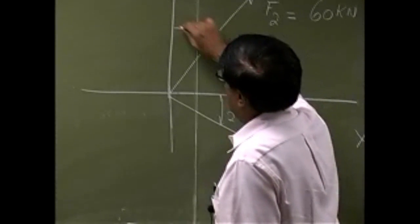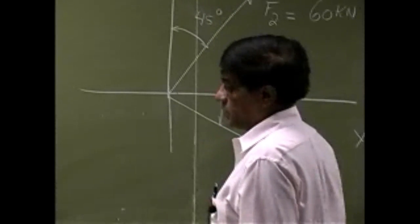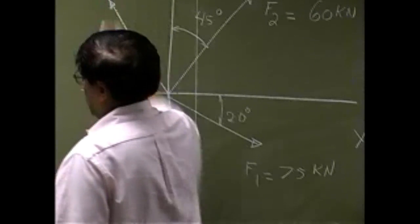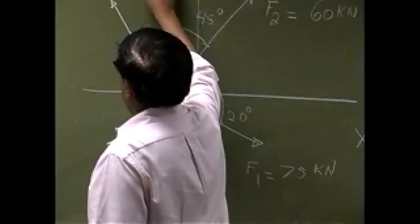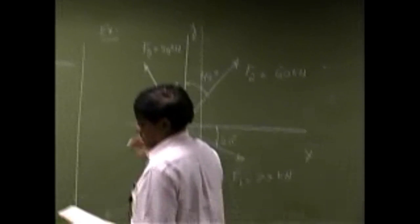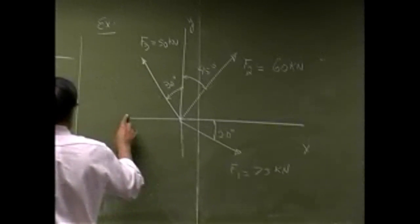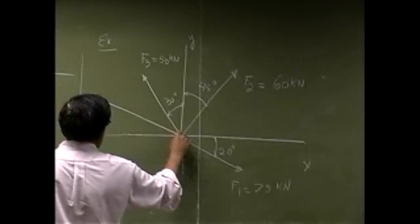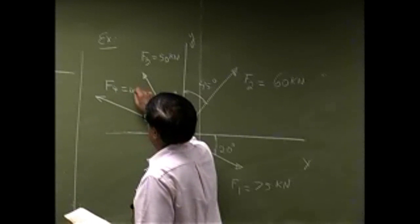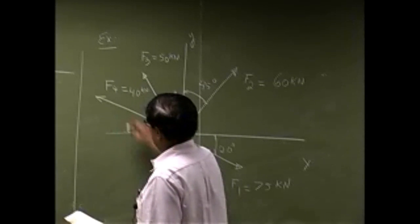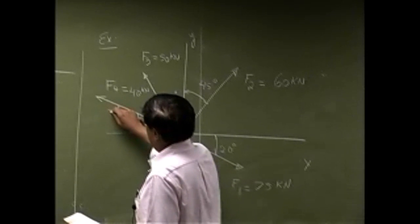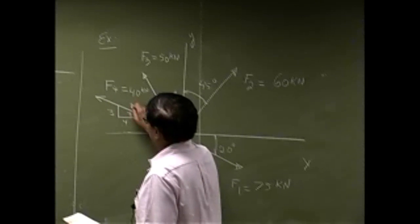F2 makes an angle of 45 degrees with the Y axis. Then you have a third force — that's F3 — with the magnitude of 50 newtons. It makes an angle of 30 degrees with the Y axis. Then we have another force, F4, and the magnitude for that is 40 newtons. The direction is given by an angle theta where the ratios for the triangle are 3, 4, and 5.